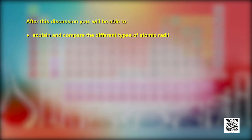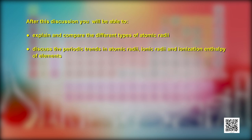Hello students. By now we know the concept of groups, periods, and how to locate an element's position in the periodic table based on electronic configuration. Let us discuss a few physical properties and their periodic trends. After this discussion, you will be able to explain and compare the different types of atomic radii, discuss the periodic trends in atomic radii, ionic radii, and ionization enthalpy of elements.